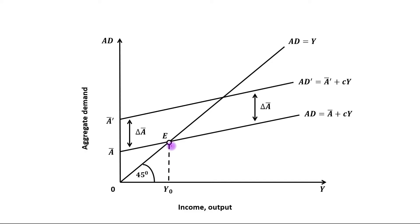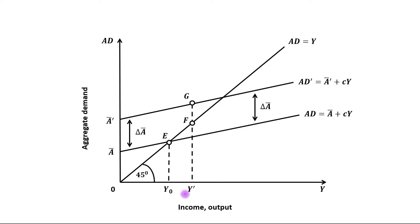You can see that at the initial equilibrium, aggregate demand exceeds output by the change in A-bar. So to reach the new equilibrium, firms need to increase their production. Suppose that firms increase their production to OY dash. We know that a fraction of the increase in income — that is, MPC of this increase in income — will be spent on consumption.